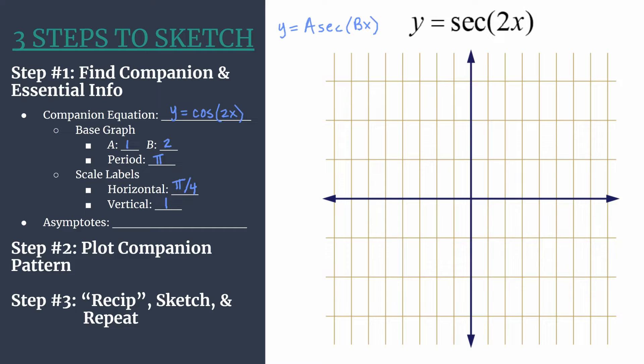Let's go ahead and label our axes. We'll count on the horizontal axis first, π over 4, 2π over 4 which reduces to π over 2, 3π over 4, 4π over 4 which is reduced to π, 5π over 4, 6π over 4 reduces to 3π over 2, 7π over 4, and 8π over 4 reduces to 2π.